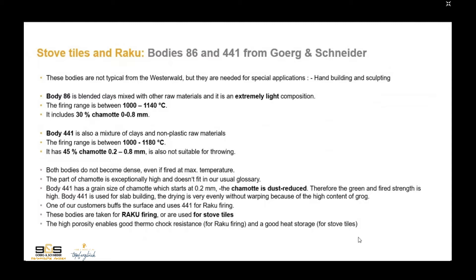Both bodies do not become dense even if fired at maximum temperature. The part of chamotte is exceptionally high and does not fit our usual classification. Body 441 has chamotte grain size starting at 0.2 mm, and the chamotte is dust-reduced, so the grain and fired strength is high. Body 441 is used for slab building; drying is very even without warping due to the high content of grog. One customer buffs the surface and uses 441 for raku firing. The high porosity enables good thermoshock resistance and good heat storage.